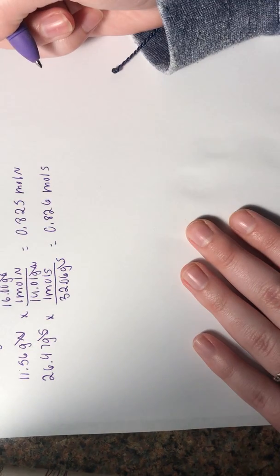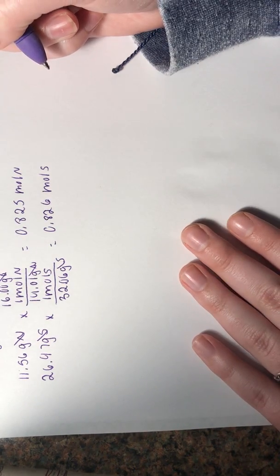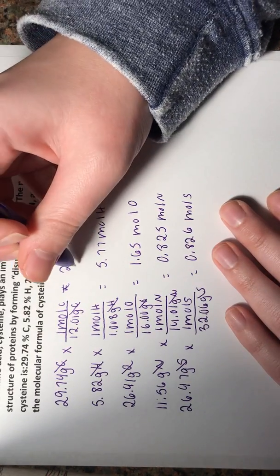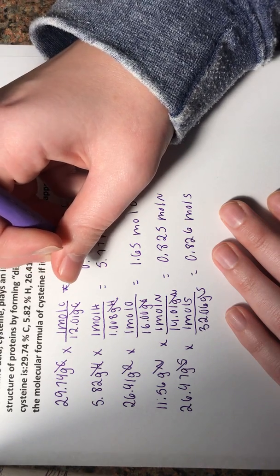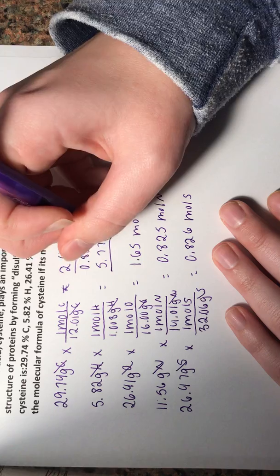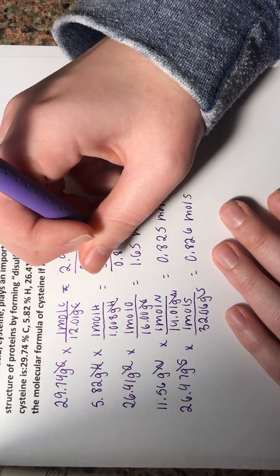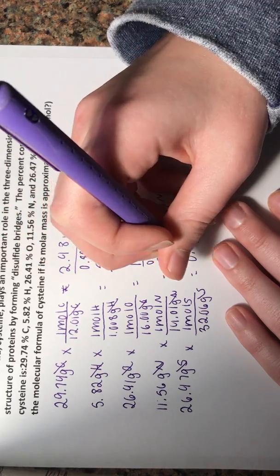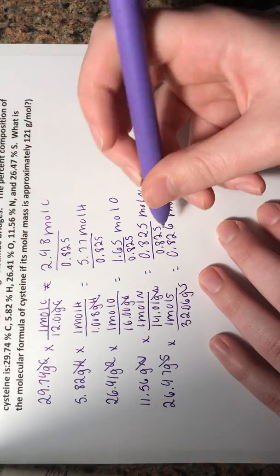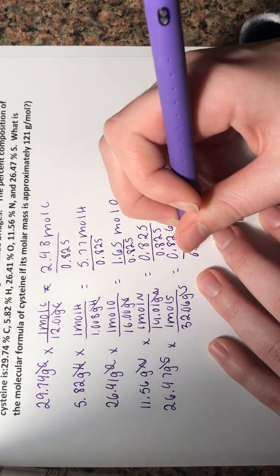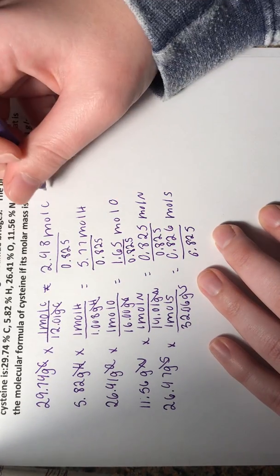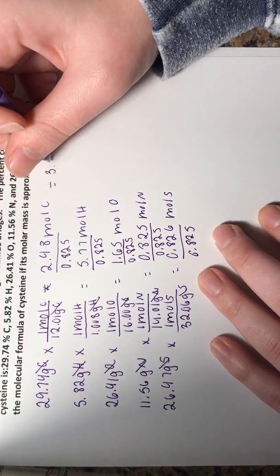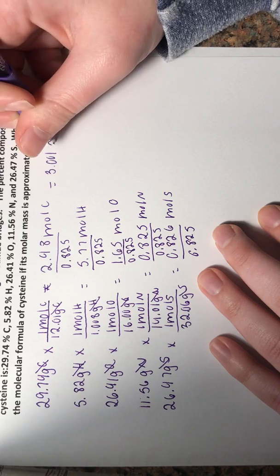Let's go ahead and do this. We have 0.825, and then we'll just go ahead and write that out. So this is going to be, after dividing, this is going to be 3.001, so that is approximately 3.